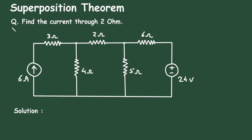Superposition theorem. Question: Find the current through 2 ohm. Here in this circuit, we have to find the current through this 2 ohm resistance by using the superposition theorem.